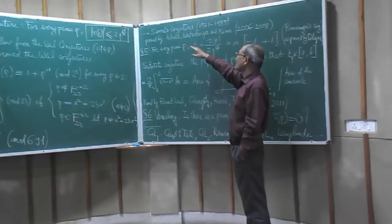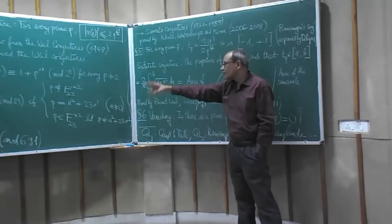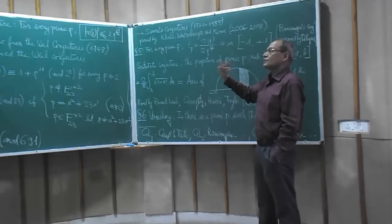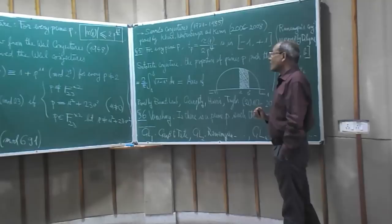And these conjectures were finally proved by Khare, Wintenberger and Kisin in the years 2006 to 2008. So these observations of Ramanujan about the congruences satisfied by the tau function turned out to be crucial to spur Serre to think about these things and try to understand the source of these congruences.